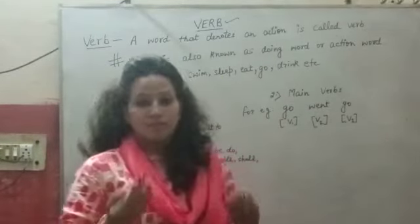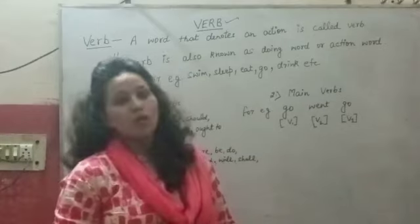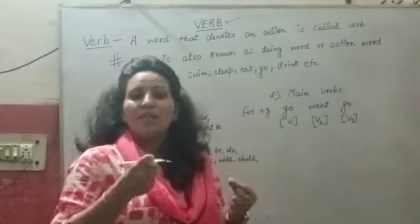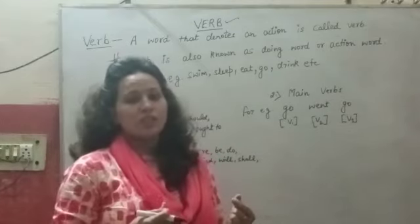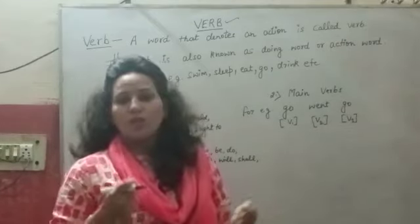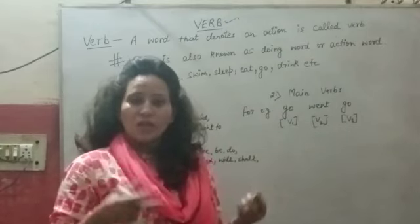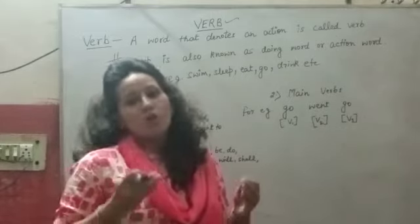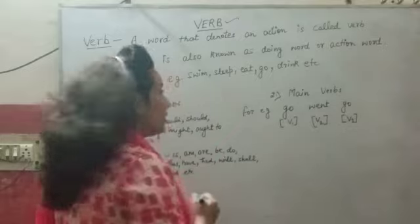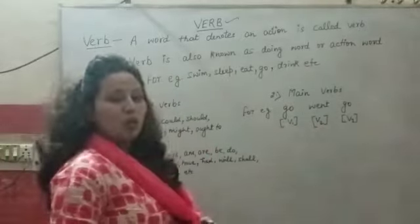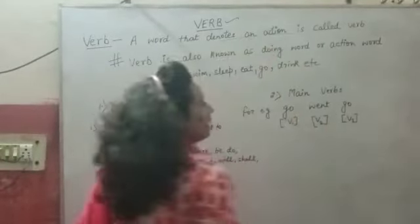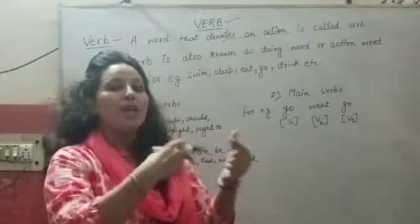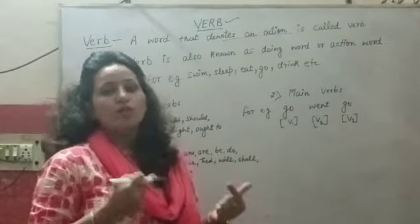Verb is the word that shows our actions. For example, Hussna, Rona, Gana, Sona, Natchna, Pudna, Lickna — we are going to study the verb. A word that denotes an action is called a verb. That means, the word that shows there is an action — that is a verb.